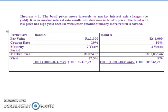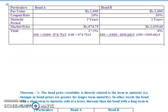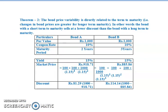Let us now understand what exactly theorem 2 is. Theorem 2: the bond price variability is directly related to the term to maturity. That is, changes in bond prices are greater for long-term maturity. In other words, the bond with short term to maturity sells at a lower discount than the bond with a long term to maturity.